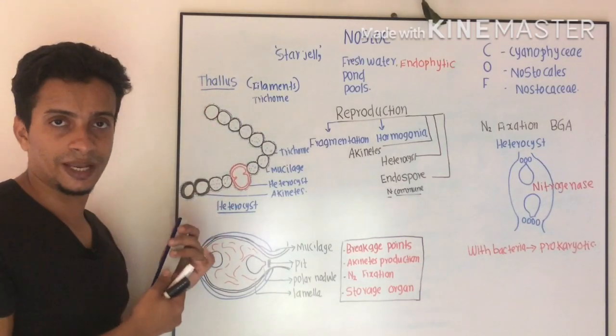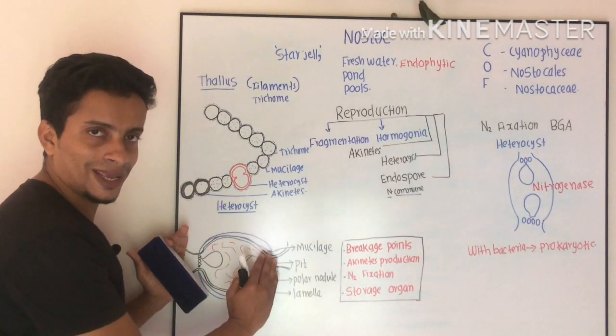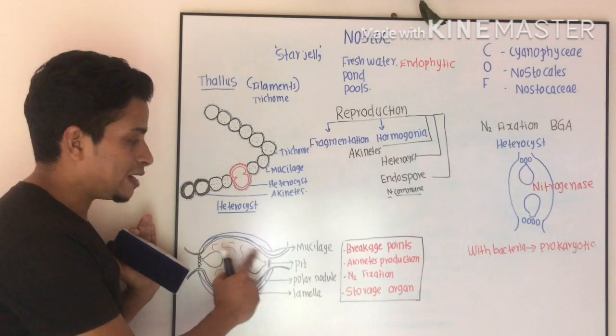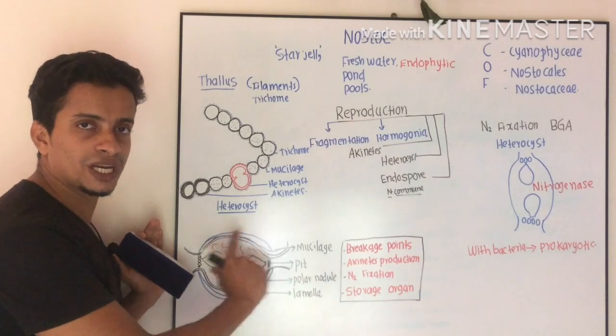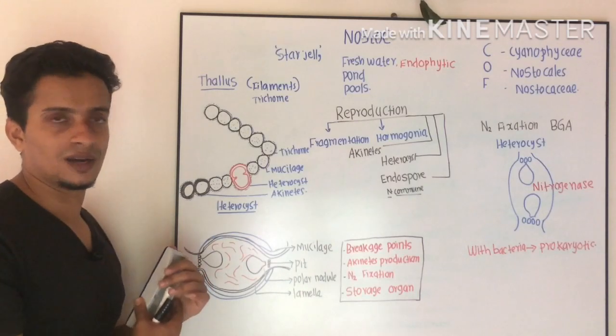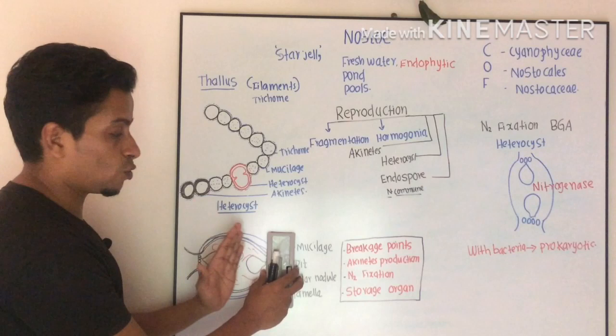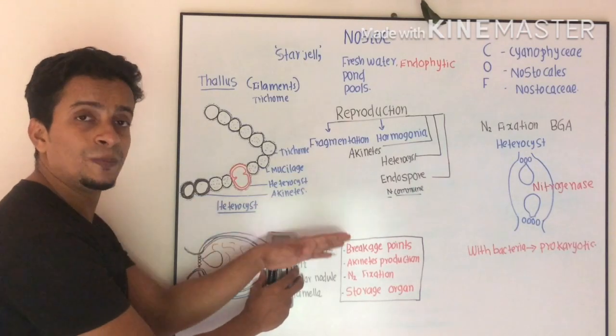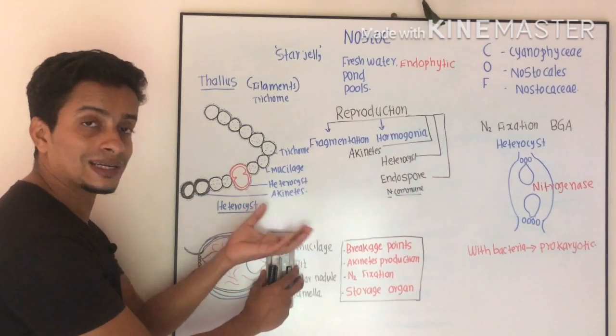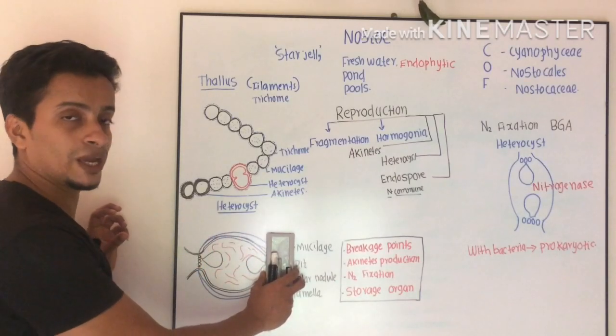If you see a terminal position, the heterocyst is at the end. It is terminal, but one side will be connected to the cell.